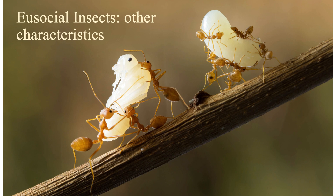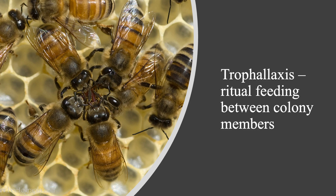I want to talk about some remarkable characteristics of eusocial insects, mostly using ants as examples. After traveling in the tropics, I genuinely fear ants — the things they can do and the size of their colonies is amazing. One key characteristic associated with eusocial organisms is trophallaxis — ritual feeding between colony members. Trophallaxis is not only regurgitating resources among the colony, but also spreads pheromones for communication and inoculates members with beneficial bacteria and yeast for digestion.